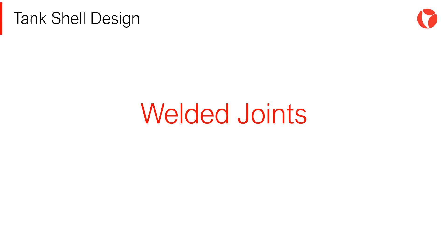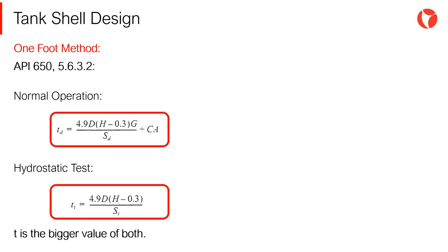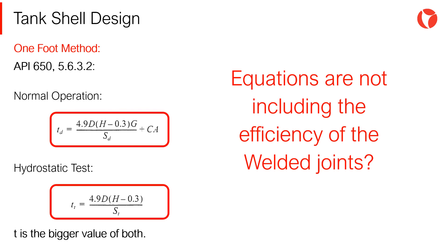As usual in welded fabricated mechanical equipment, and also for storage tanks, welded joints represent a critical aspect. Shell plates will be joined by means of butt welding; they must be presented and kept in position throughout the process. Misalignments in large tanks are very frequent, so tolerances of the sheets should be controlled as much as possible. So, if welded joints are critical for the structural stability of the tank, why aren't the equations accounting for efficiency and reliability of the welded joints?